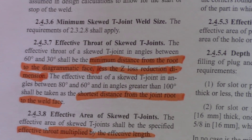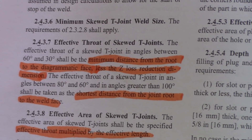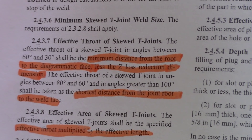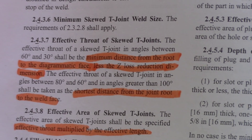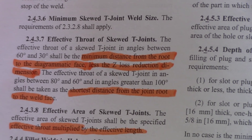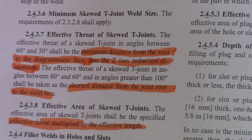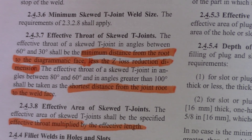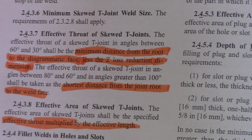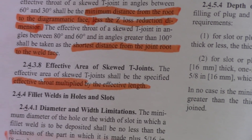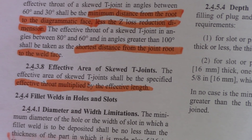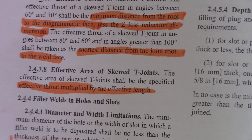Now on page 8, the effective throat of skewed T-joints: if it's between 60 and 30 degrees, it shall be the minimum distance from the root to the diagrammatic face less the Z-loss reduction dimension. For angles between 80 and 60 and greater than 100, it shall be taken from the shortest distance from the root of the joint to the weld face. The effective area is simply your effective throat multiplied by the effective length, which is just the length of the weld.